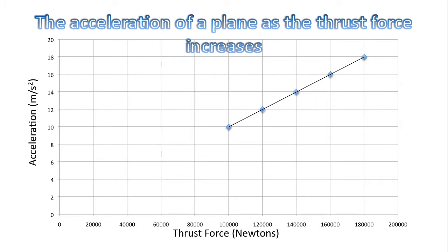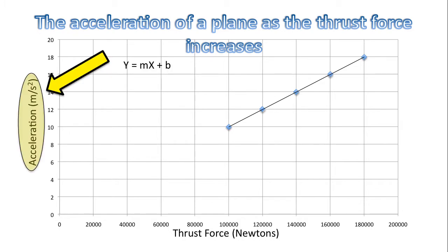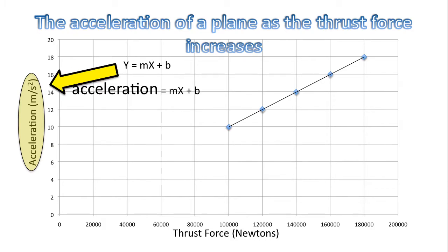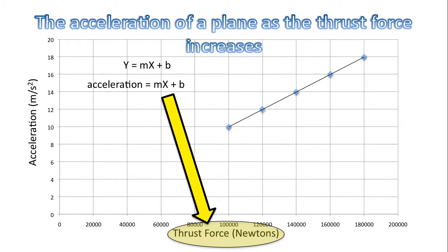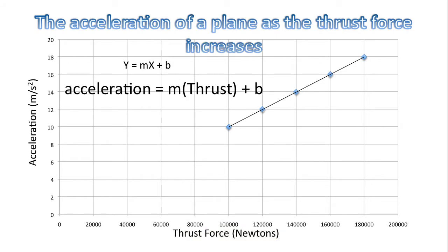Let's plot this data with thrust force on the x-axis and acceleration on the y-axis. Let's try to determine the equation for this line. We have the most general equation, y equals mx plus b. Our y-axis is acceleration, so we'll rewrite that as acceleration equals mx plus b. Our x-axis is thrust, so the equation becomes acceleration equals m times thrust plus b.